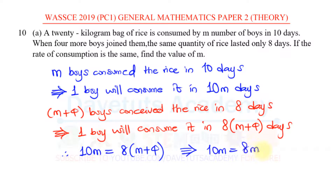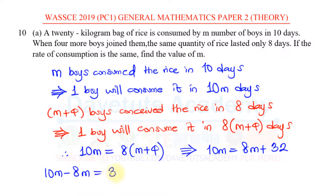Expanding, 8 times M gives 8M, and 8 times 4 is 32. To solve that, we take 8M to the other side, so we have 10M minus 8M is equal to 32, which gives us 2M equals 32.